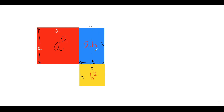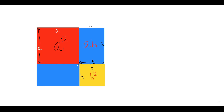We draw the same blue rectangle again in the empty space. This second rectangle also has the same dimensions — one side is b (matching the original) and the other side is a (matching the red square) — so its area is also ab. Both blue rectangles have equal area ab.